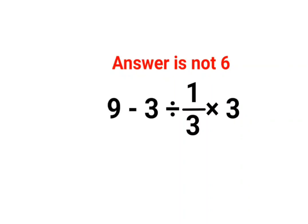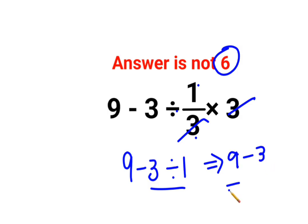Welcome everyone. Today we are going to understand why the answer for this question is not supposed to be 6. A lot of people think that this is 3 divided by 1 upon 3 multiplied by 3. So this 3 and 3 gets cancelled. We have 9 minus 3 divided by 1. This becomes basically 9 minus 3, so the answer is 6.